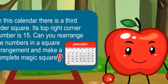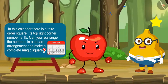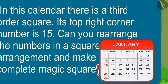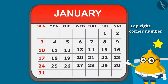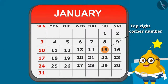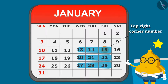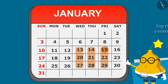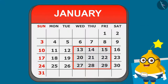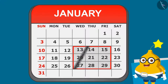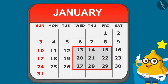After a few minutes, Fruity says: the top right corner number of the square is 15 and the square is of third order, so the square is this. Yes, I can make a complete magic square by rearranging the numbers in this square arrangement. Let me show you how.